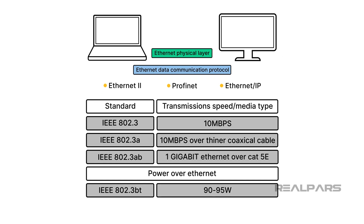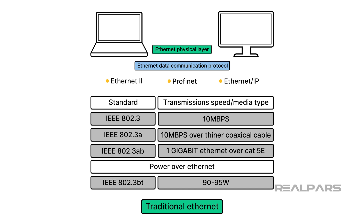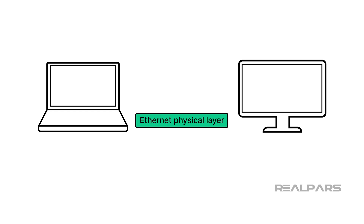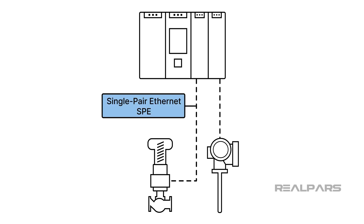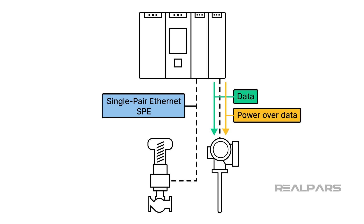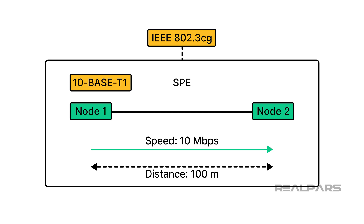These flavors of Ethernet can be called traditional Ethernet, since only data is transmitted over these physical and logical protocols. However, a new type of Ethernet physical layer has been introduced which has many advantages in an industrial manufacturing setting. This new Ethernet physical standard is called Single Pair Ethernet, or SPE, and uses only a single pair of wires to communicate data. SPE operating at a speed of 10 megabits per second is defined as IEEE 802.3cg.